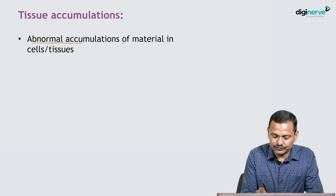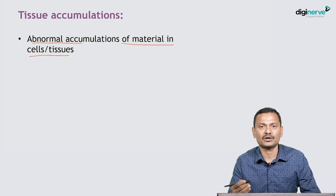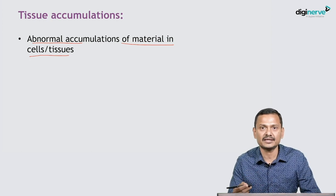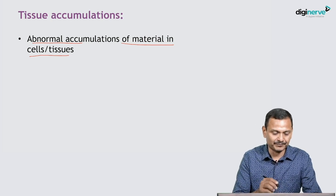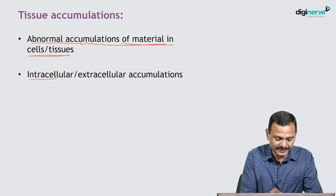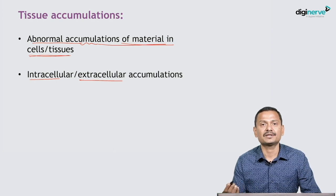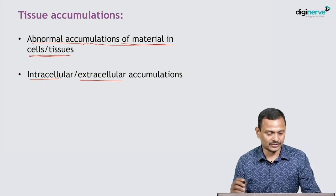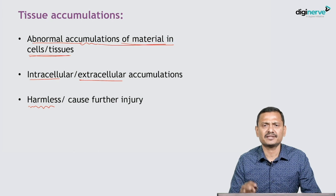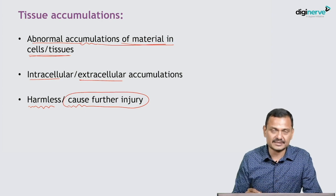Abnormal accumulations of material in cells or tissue — normally we will not have deposits. For example, melanin is present in the skin, which is not abnormal. But if we have hemosiderin in the subcutaneous tissue, that is abnormal. Accumulation can be intracellular or extracellular. If within the cytoplasm or nucleus, it is intracellular; if deposited outside, such as in the vessel wall, it is called extracellular. These deposits could be harmless, causing no symptoms and no problem to the cell, but they could also propagate further cell injury.